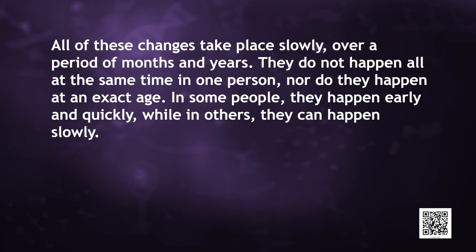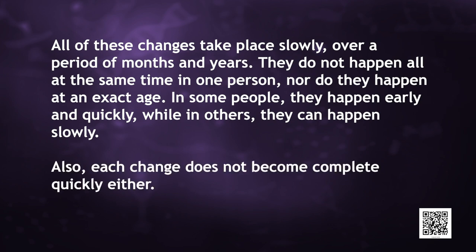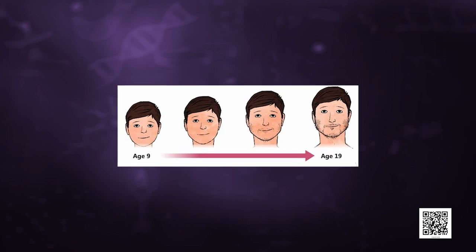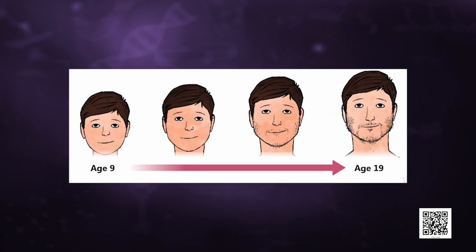These changes do not happen all at the same time in one person, nor do they happen at an exact age. In some people, they happen early and quickly, while in others they can happen slowly. Each change does not become complete quickly either. For example, thick hairs on the face in boys appear as a few scattered hairs first, and only slowly does the growth begin to become uniform. All these changes show differences between people, just as we have differently shaped noses and fingers, we also have different patterns of hair growth. All of these changes are aspects of sexual maturation of the body.